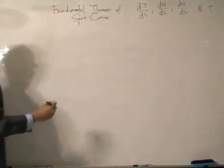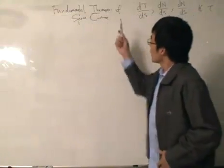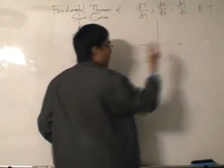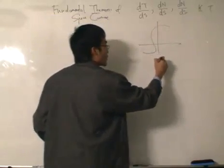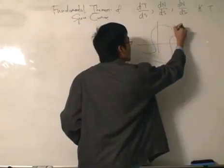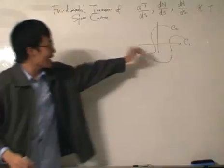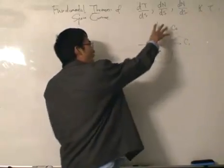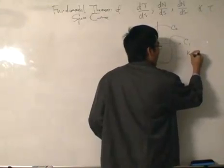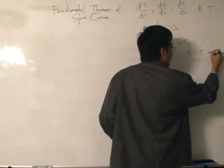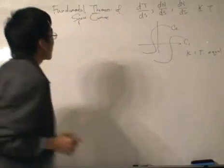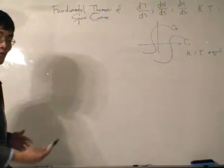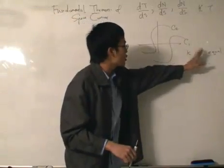Much like how we had the Fundamental Theorem of Calculus and the Fundamental Theorem of Algebra. The Fundamental Theorem of Space Curves says that when we have two curves in three-dimensional space, though we don't know whether they are the same — let's call them C1 and C2 — two curves would be congruent, meaning we can rigidly transpose one to the other such that they fit line for line, if the values of kappa and torsion are equal.